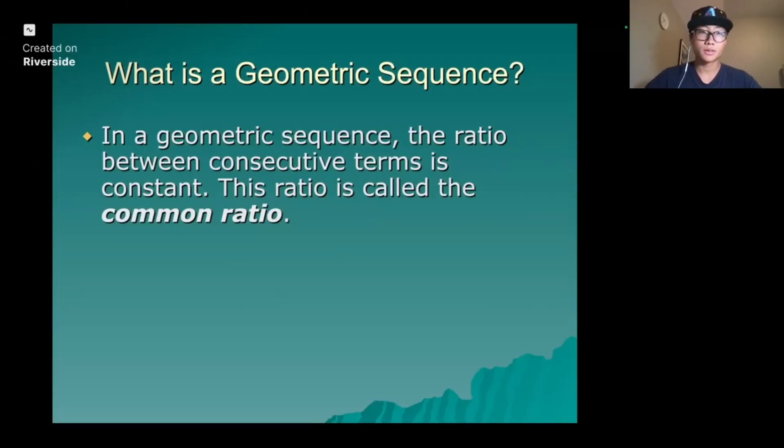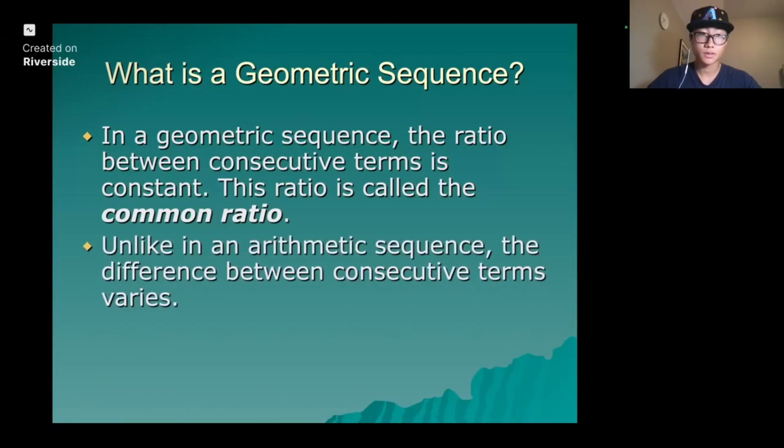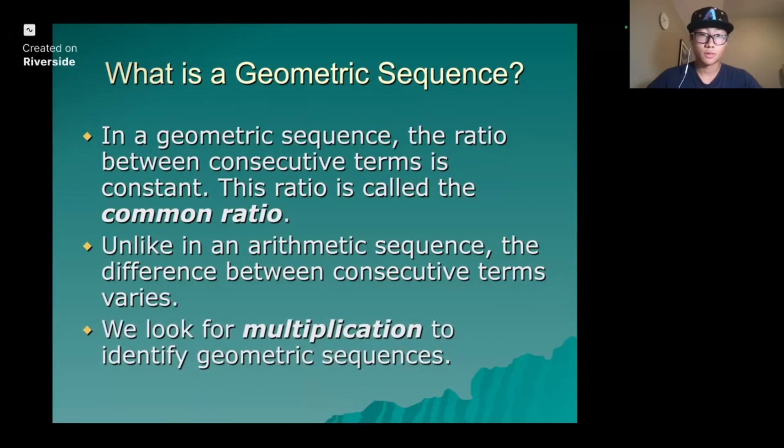What is a geometric sequence? In a geometric sequence, the ratio between consecutive terms is constant. This ratio is called the common ratio. Unlike in an arithmetic sequence, the difference between consecutive terms varies. We look for multiplication to identify geometric sequences.